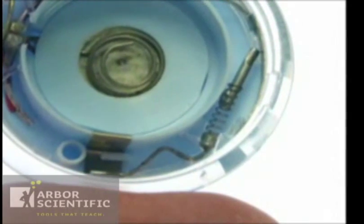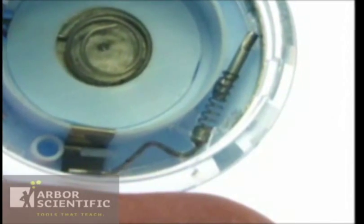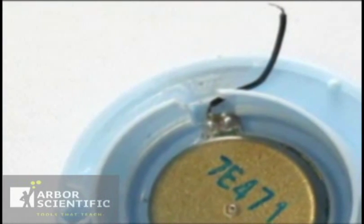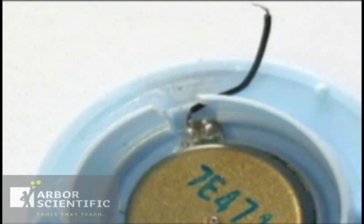By removing the bottom of the battery compartment, you'll see that attached to the bottom of the casing is a small flat disc about the size of a dime.